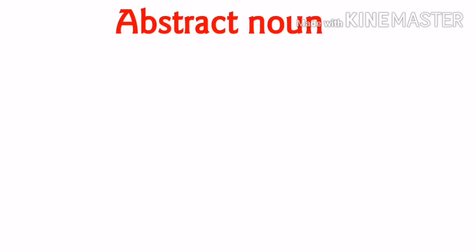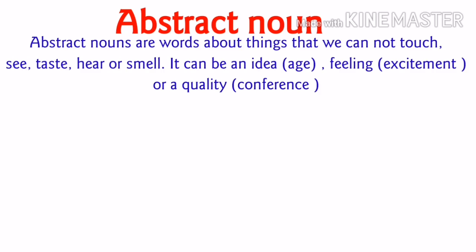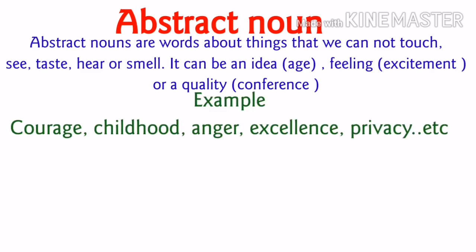Now let's see what is abstract noun. Abstract nouns are words about things that we cannot touch, see, taste, hear or smell. It can be an idea, a feeling or a quality. For example: courage, childhood, anger, excellence, privacy, etc. We cannot touch, smell, taste or hear courage, so that is an abstract noun.